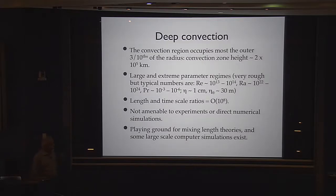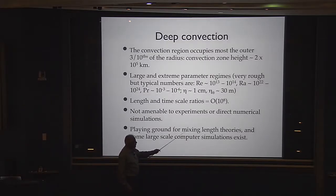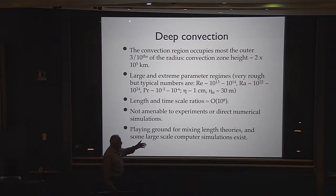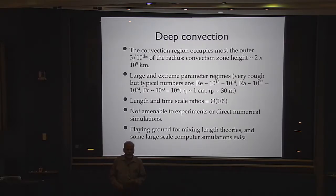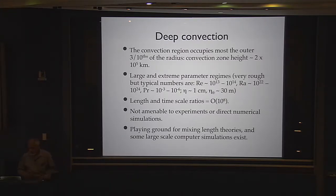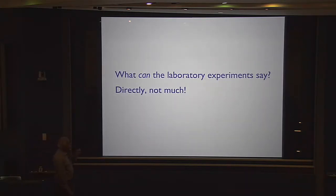What one can do is make some theoretical models — starting with the so-called mixing length models — or simulate some large-scale parameters without going into all the small structure in the flow. You can also measure some parts of it. So the first question to ask is: what can laboratory experiments say? Directly, not very much.